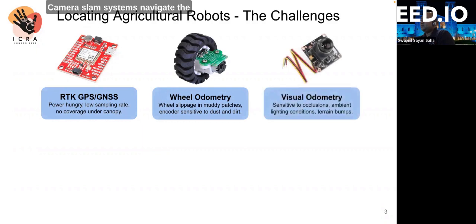Camera SLAM systems navigate the robot without map information. However, cameras suffer from occlusions, shadows, lighting conditions, and bumpy terrains.